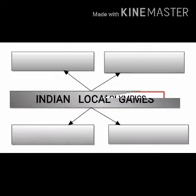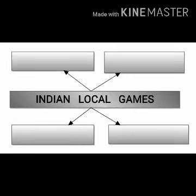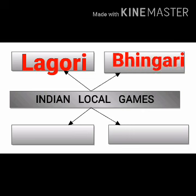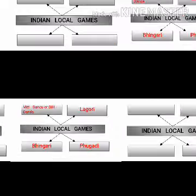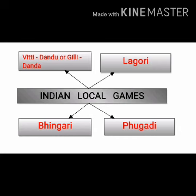Now read the seventh web question: Indian local games. Write down the first one, Lagori. In the second box write down marbles. In the third box write down Fugadi. In the fourth box write down Vitti Dandu or Gilli Danda. You can also write down other names given in the textbook. Whichever you find easy to learn and write with the proper spelling, you can select that from the textbook.